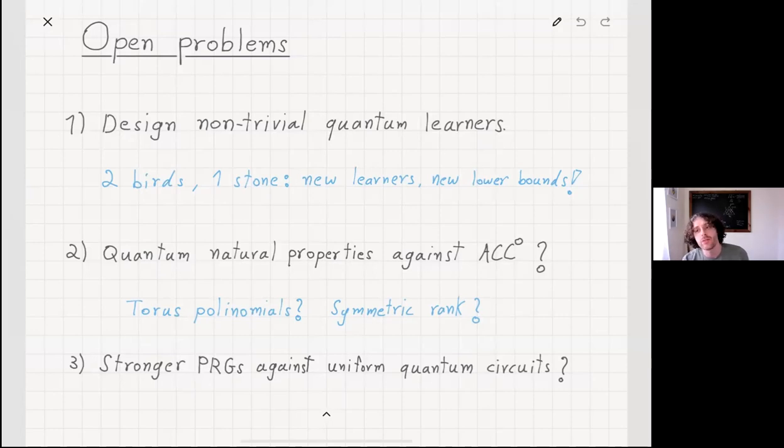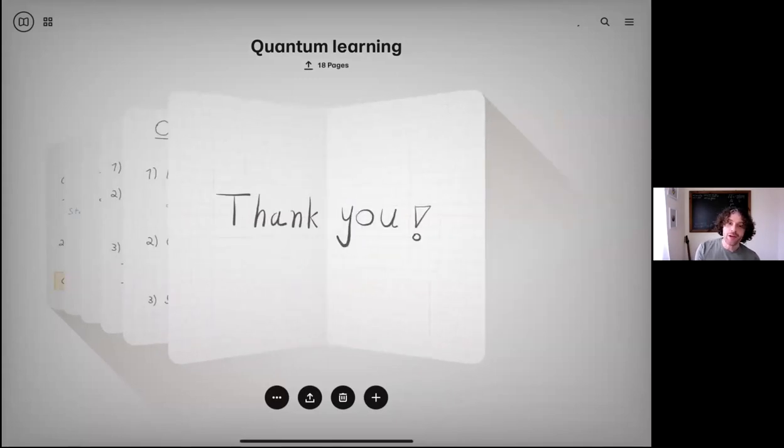The last one is, can we design even stronger and better pseudo-random generators against uniform quantum circuits? This is the first such PRG, but any improvement would have interesting implications. Thank you very much.